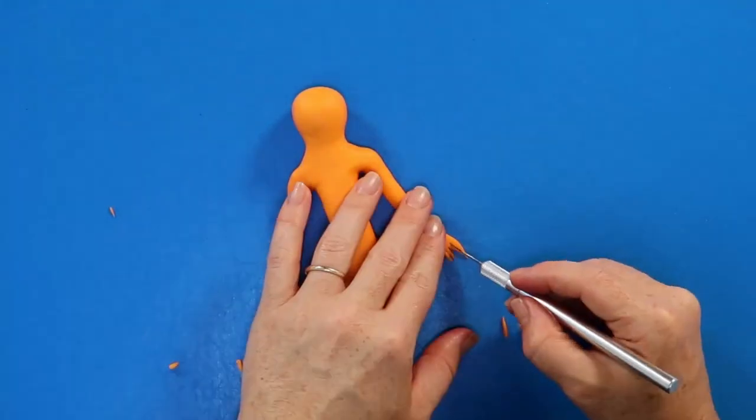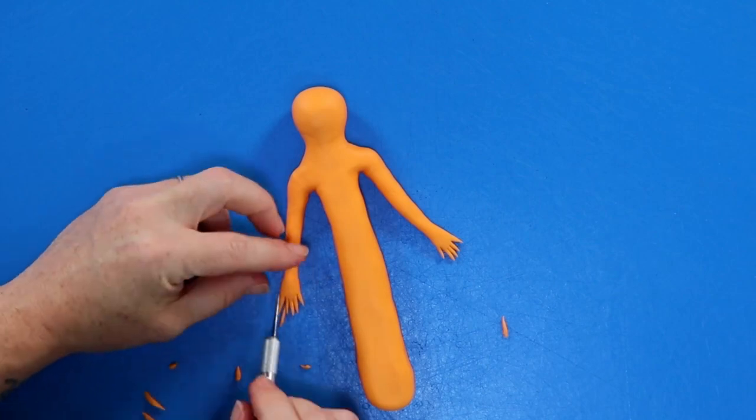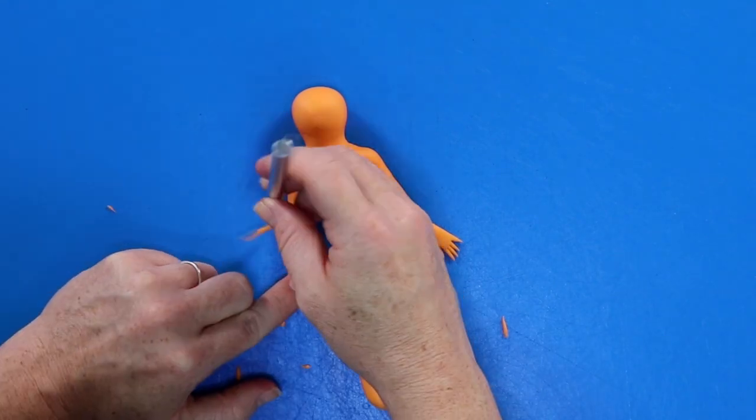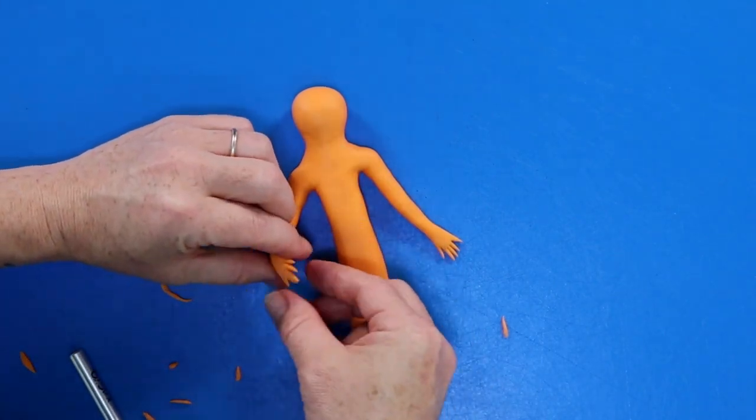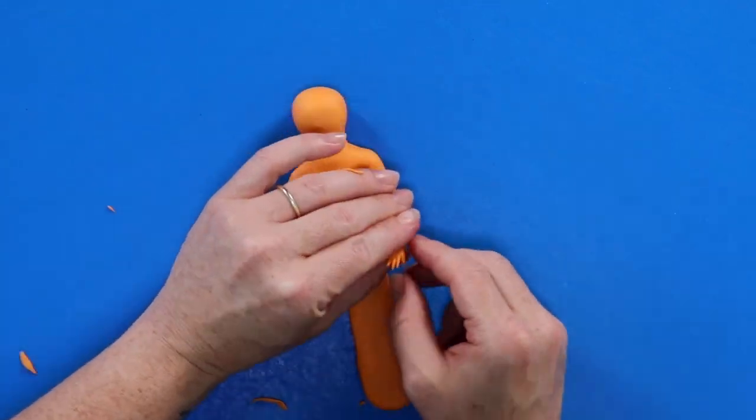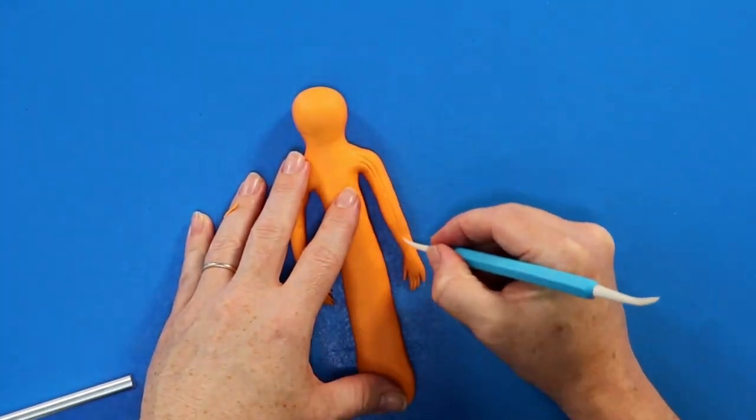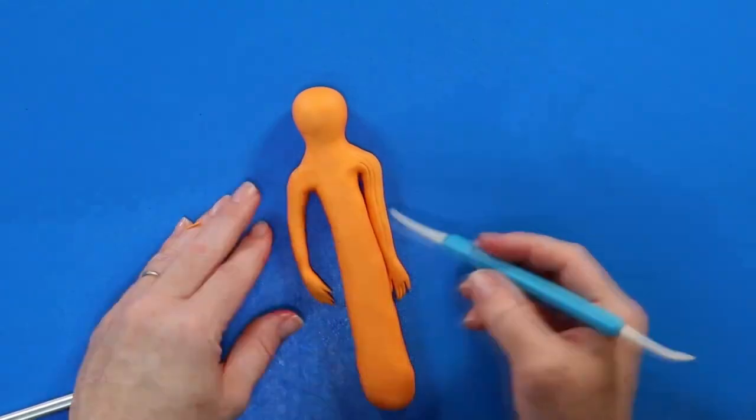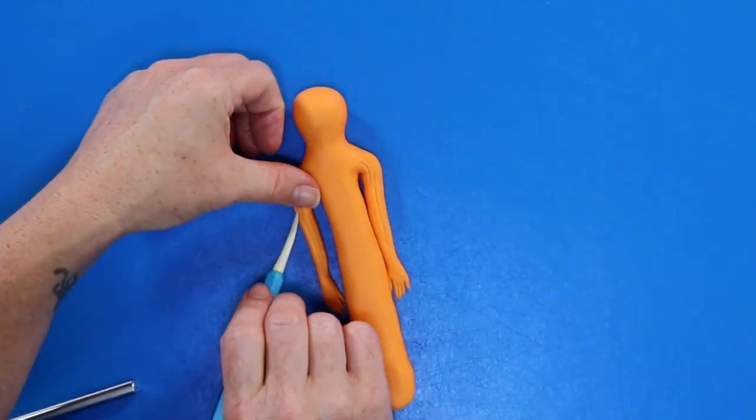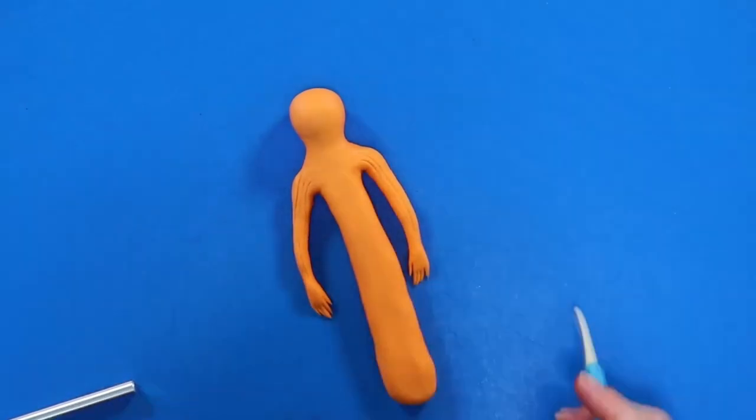We're just gonna pull a few little pieces away to leave some gaps in between those fingers as well, and now we're just gonna shape the hand a tiny little bit to make it look a little bit more like a fin. Then I'm gonna grab my dresden veining tool and while the fondant is still nice and soft on the arms, we're gonna emboss some stripes down the sides to make him look like he has fish skin.